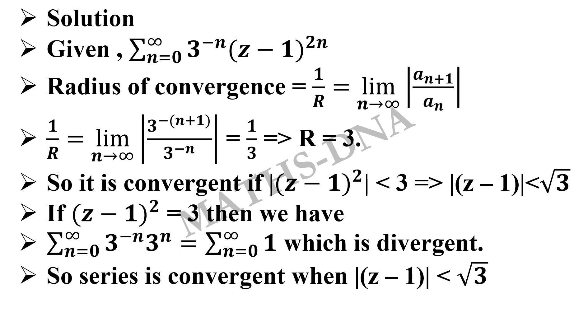Hence, our series is convergent when mod z minus 1 is less than root 3, not equal to root 3, which is option C.